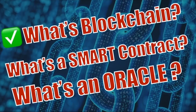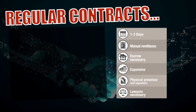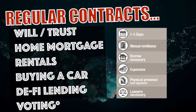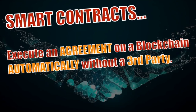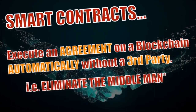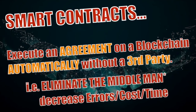That takes us up to what's blockchain — I think we solved that. Let's take a look at what's an actual smart contract. Regular contracts — things like wills and trusts, home mortgages, rentals, buying a car, regular lending, and voting — take one to three days, require manual remittance, escrow, lawyers, and you have to physically be present with a wet signature and maybe a notary public. It gets very expensive with all these different third parties involved.